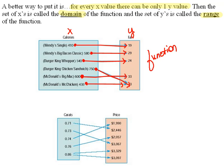Now remember, our function definition said for every x value, there can only be one y value. Now just think about that. In order for this to not be a function, we would have to have a sandwich with two different fat grams. That doesn't make any logical sense, does it? Absolutely not.